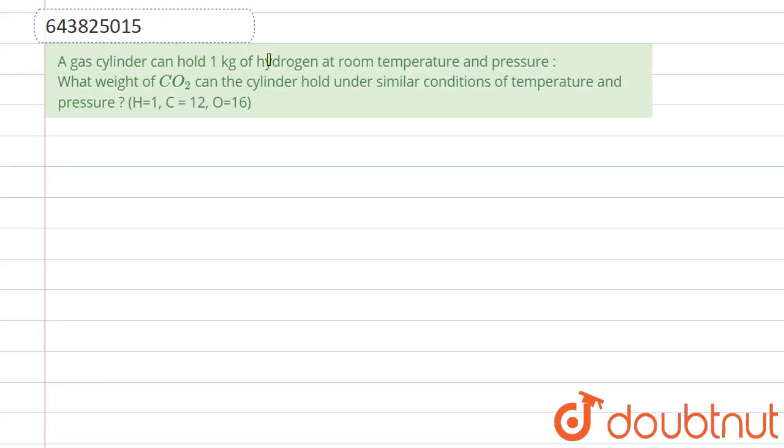A gas cylinder can hold 1 kg of hydrogen at room temperature and pressure. The question is asking: what weight of CO2 can the cylinder hold under similar conditions of temperature and pressure?